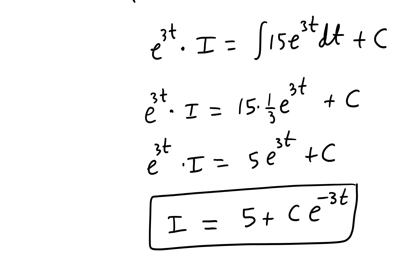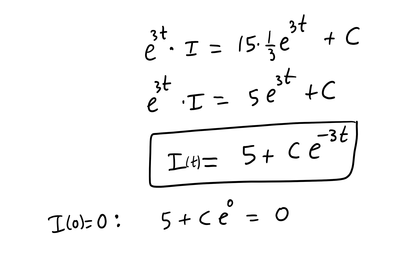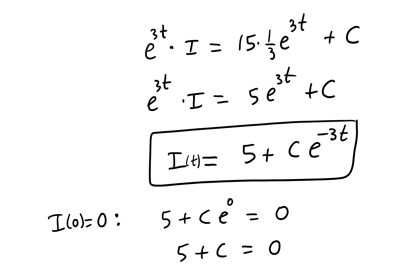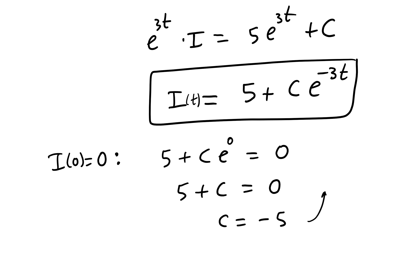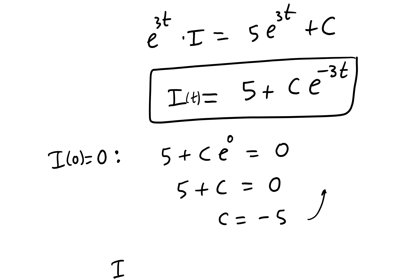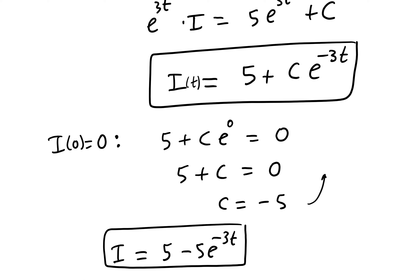That is the general solution for I. We were provided the initial condition I(0) = 0. Plugging in t = 0: 0 = 5 + C·e^0 = 5 + C, so C = −5. Substituting back, we get the particular solution I(t) = 5 − 5e^(−3t).